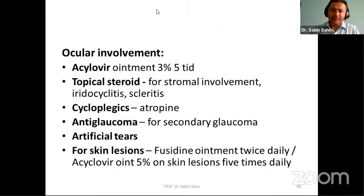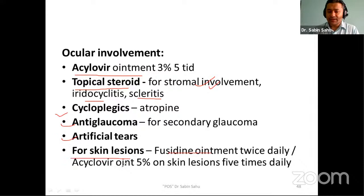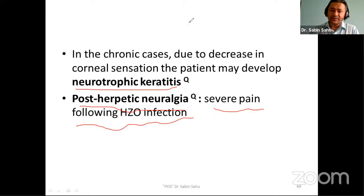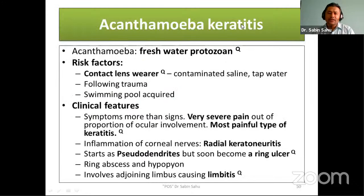For ocular involvement in herpes zoster ophthalmicus: topical acyclovir and topical steroids are given for stromal involvement, not for epithelial involvement. Cycloplegics, anti-glaucoma drugs, and artificial tears are given as supportive therapy. For skin lesions, fusidic acid ointment or acyclovir ointment is applied. In chronic cases, due to decreased corneal sensation, patients may develop neurotrophic keratitis. Post-herpetic neuralgia is a condition where severe nerve pain remains even after the herpes zoster infection is treated.